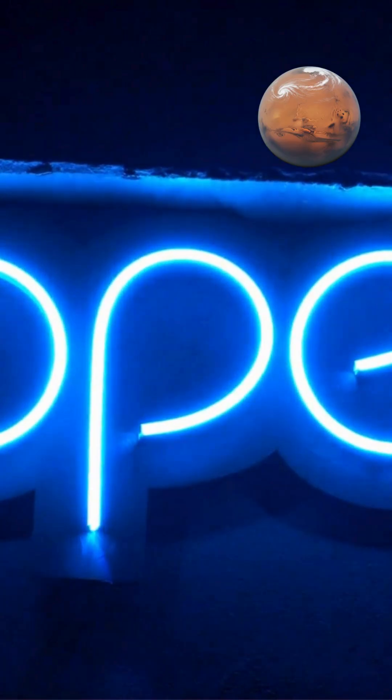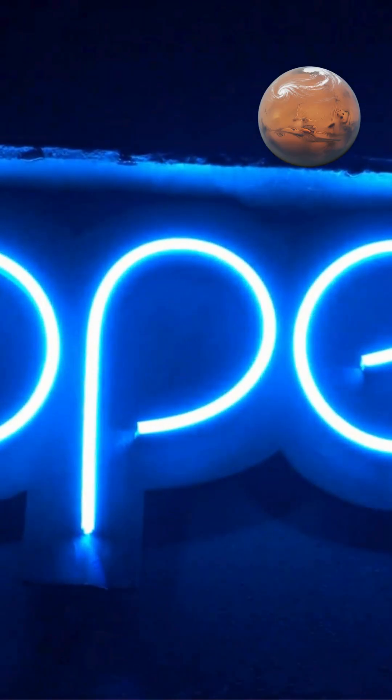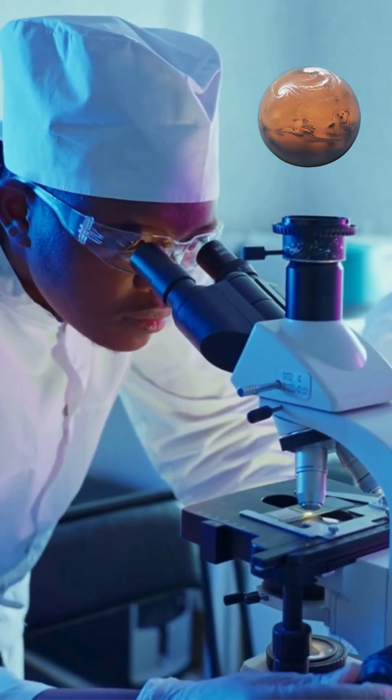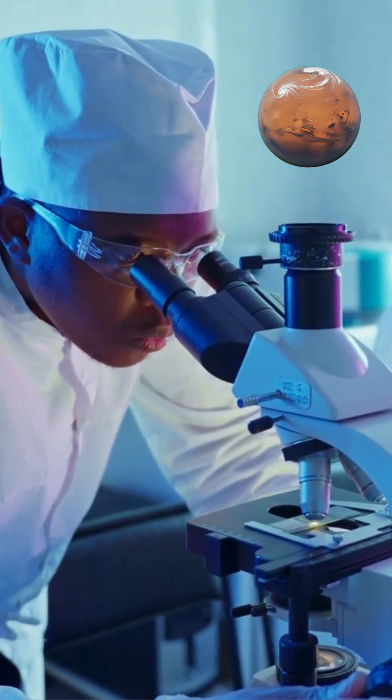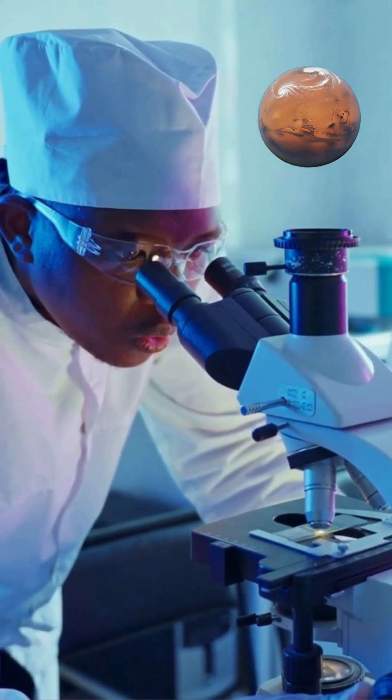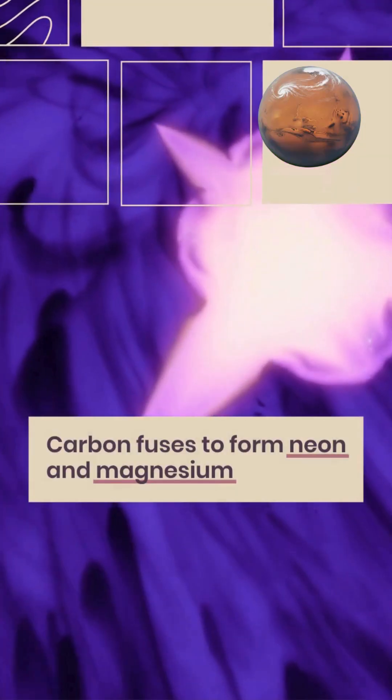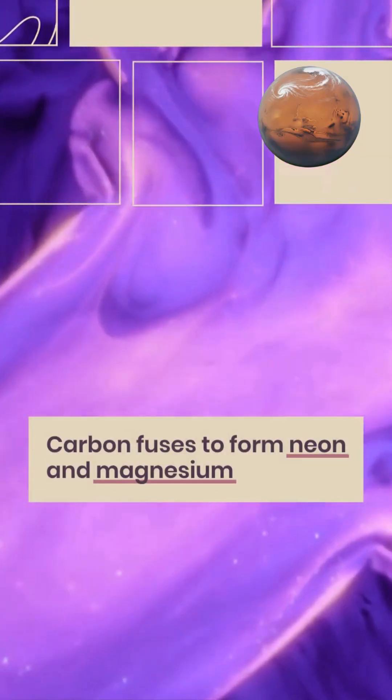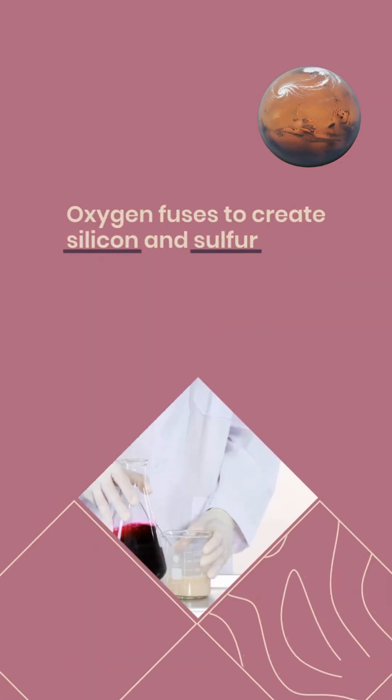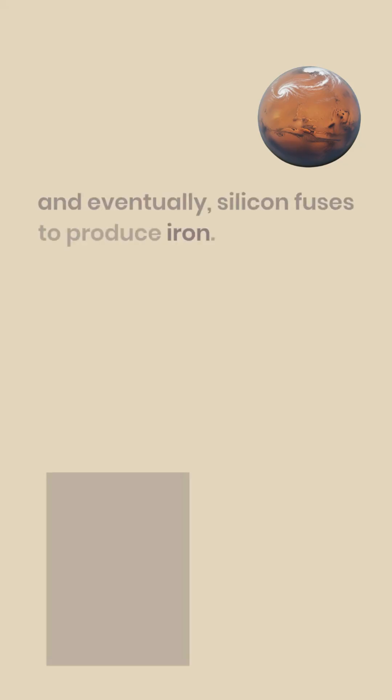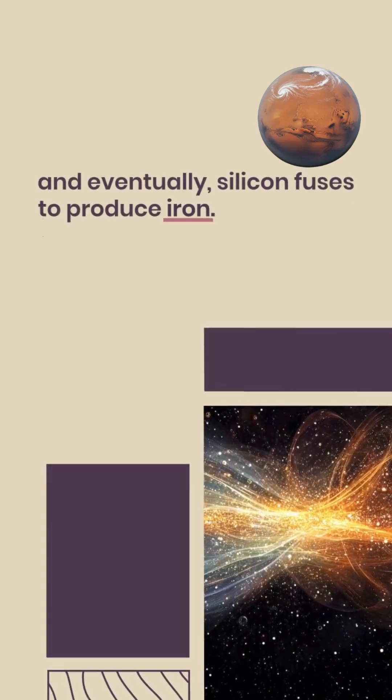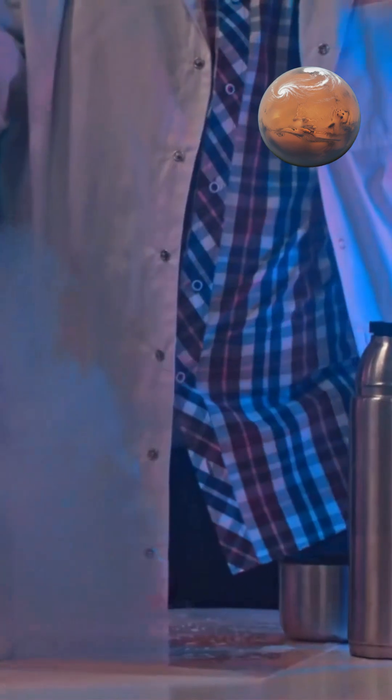Massive stars continue this chain reaction, progressively fusing heavier elements in their cores. Carbon fuses to form neon and magnesium, oxygen fuses to create silicon and sulfur, and eventually silicon fuses to produce iron. Each fusion stage creates new elemental gases and even heavier elements.